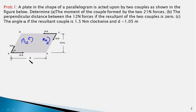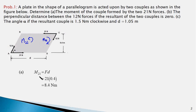We have two couples acting on this body: one anti-clockwise, another clockwise. Part a asks us to find the moment of the couple formed by the two 21-newton forces. The moment m21 equals F times d: 21 times 0.4, which equals 8.4 newton-meters in the anti-clockwise direction.